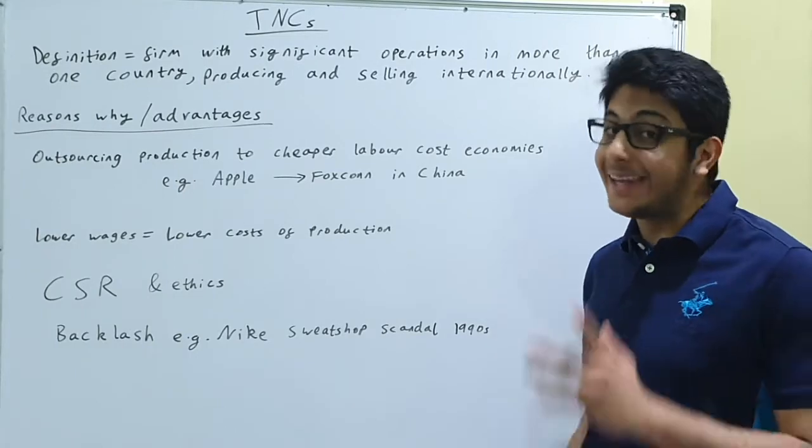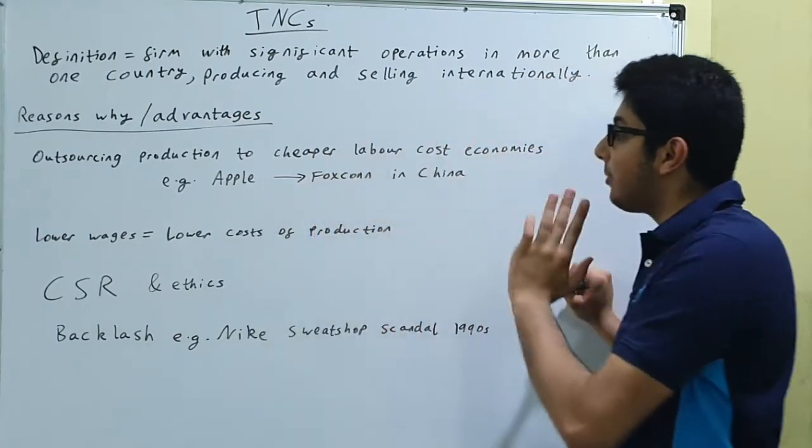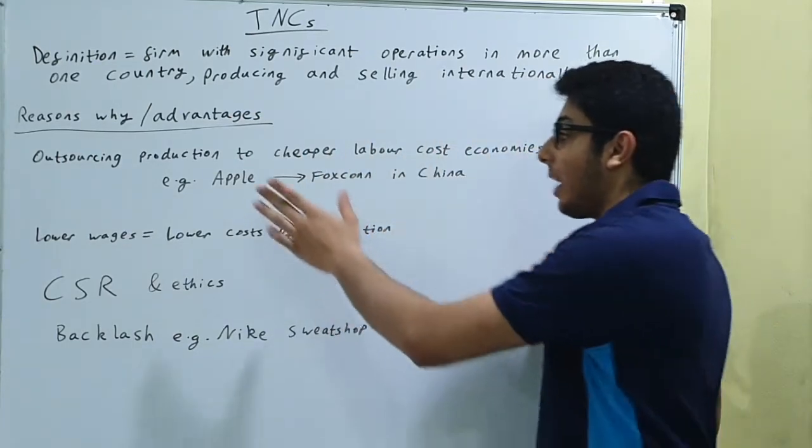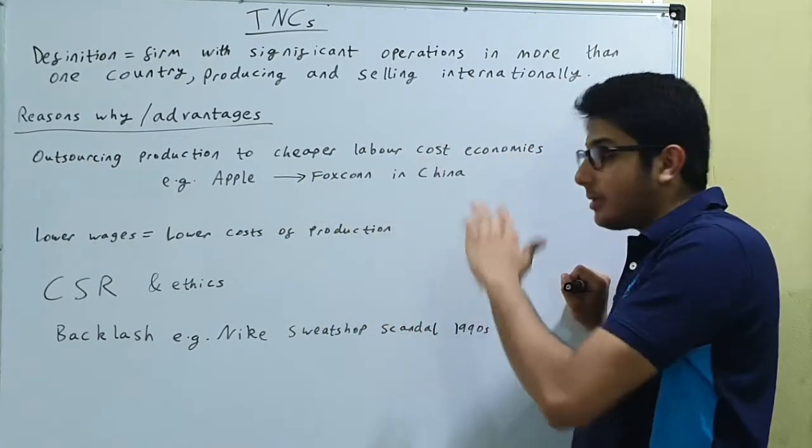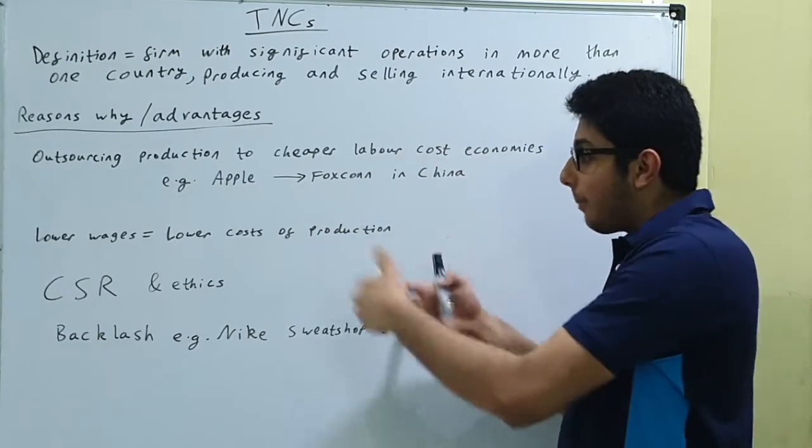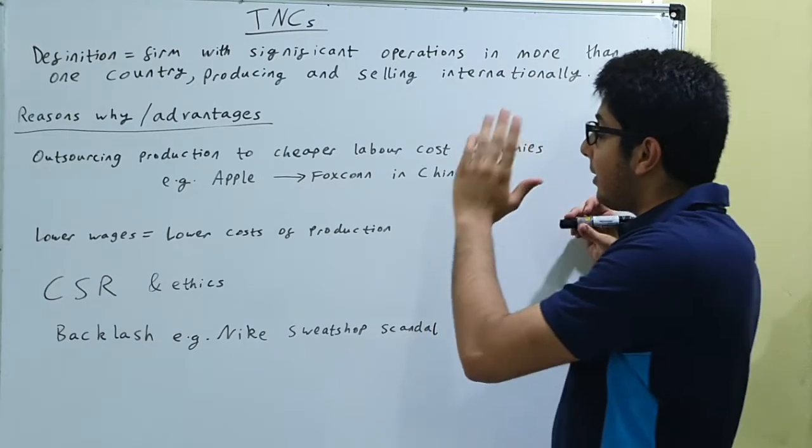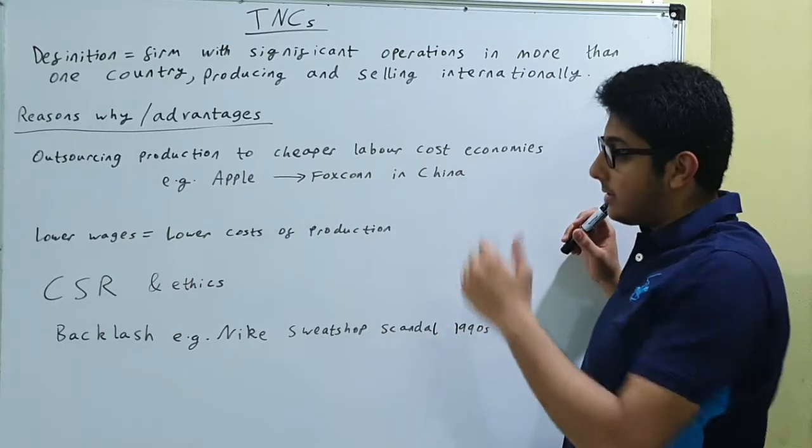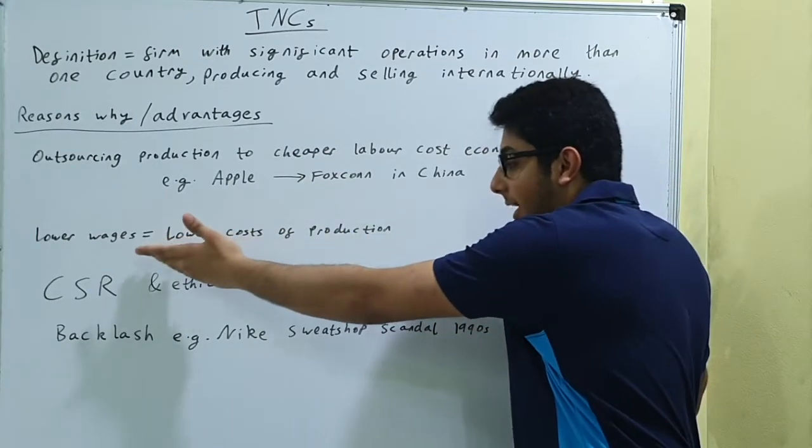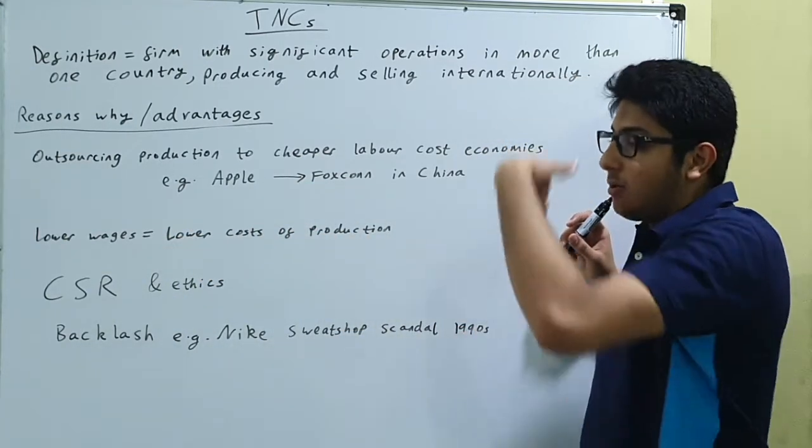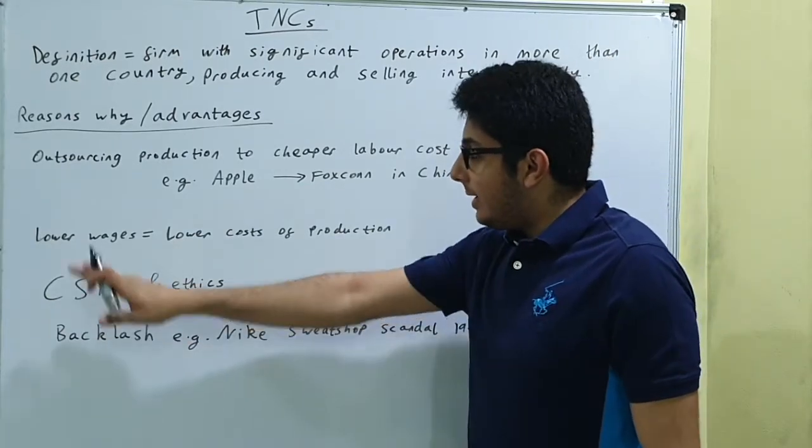Now this point you most definitely have to mention in a TNC essay, you can outsource production to cheaper labor cost economies. Just like how Apple is doing that by outsourcing its production to Foxconn in China. So Foxconn in China produces Apple's technology, its iPhones, its Macs, whatever. And because China has lower wages, Apple can benefit from those lower wages by outsourcing its production to China. And what that does is it lowers its cost of production. So less costs, more profit.